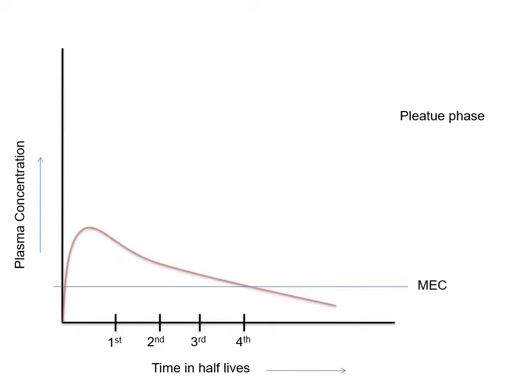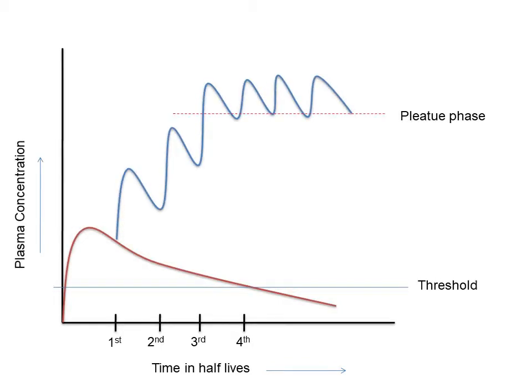Note the graph in red is single dose of drug, and in blue is repeated dosing. Note that if a drug is given single dose, after 4 to 5 half-lives the concentration of that drug in plasma is so negligible that it becomes ineffective.